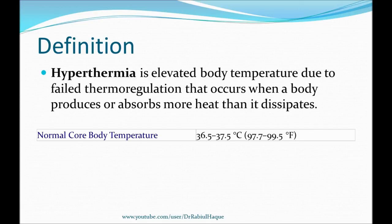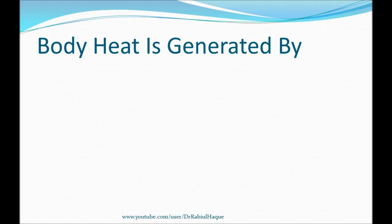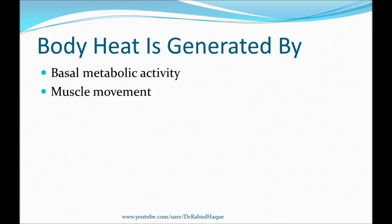Hyperthermia means elevated body temperature happening due to failed thermoregulation. Our body will produce more heat or absorb more heat than it can dissipate. In order to understand that, we have to know about heat production and heat loss. Always remember: body heat is generated by basal metabolic activity and also during muscle movement.